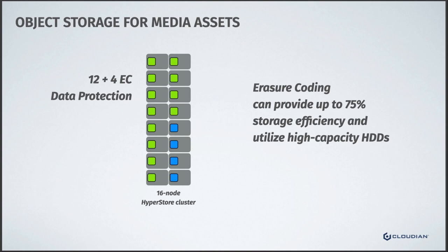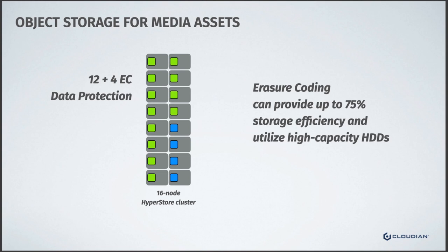One thing people don't always understand is that with object storage, you're going to get more usable capacity out of the same amount of drives. If you have a petabyte or 10 petabytes, you'll be able to use a much higher proportion of those drives efficiently, as opposed to striping RAID where you have to dedicate a lot more storage to redundancy. In this example with 16 nodes — independent storage server nodes in a larger cluster — erasure coding schemes spread data fragments across nodes to provide both data protection and availability.